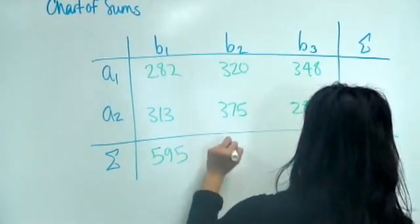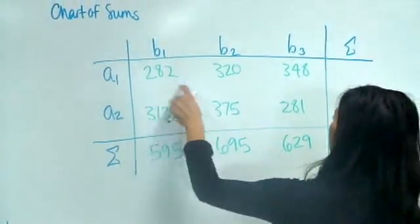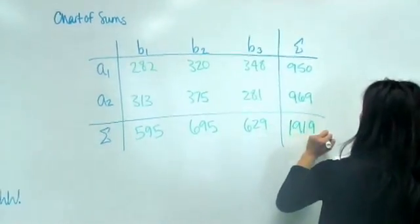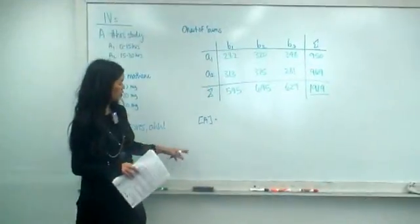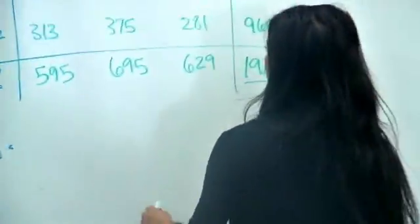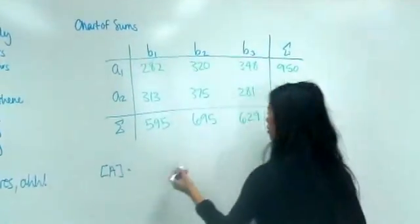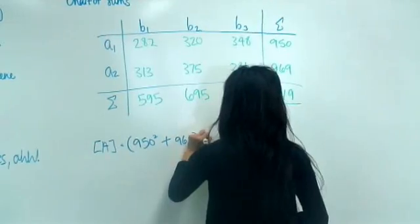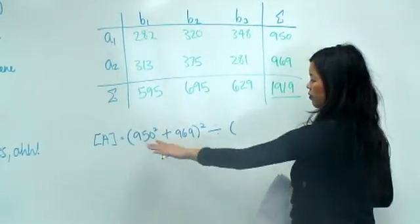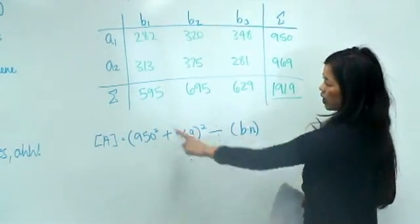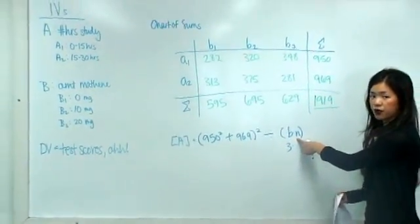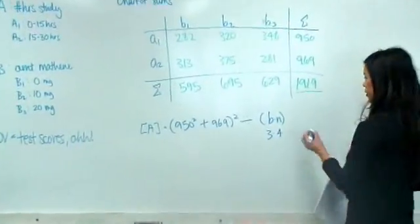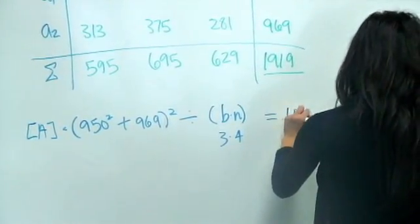Add these to get the column sum of 595, then add across the rows, and add those to get your grand sum. For the A bracket term, we look at the sums for each A group: A1 sum is 950, so it's 950 squared plus A2 sum of 969 squared. Divide by everything except A, which is B times n — three levels of B times n=4 per group. Lowercase n is per-group count; capital N is 24 total.